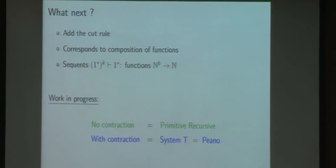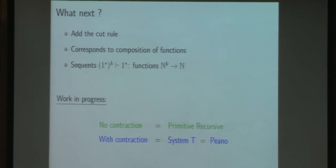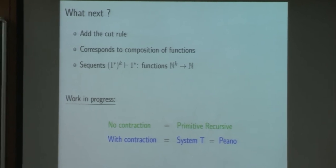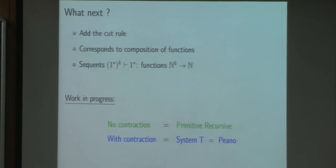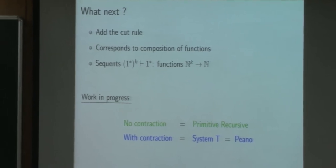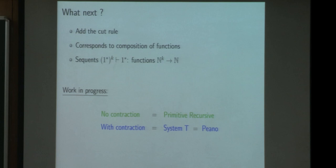And we can look at this time a restricted alphabet rather than a restricted shape of sequence by having only the one letter alphabet. We can have some sequence of the form k-tuple of stars dash A star. And it will correspond to functions of N to the power of k to N by seeing the number in unary. And what we are doing and what we conjecture is that the more general system where we don't restrict the shape of the sequence corresponds without the contraction to primitive recursive functions and with the contraction to system T.